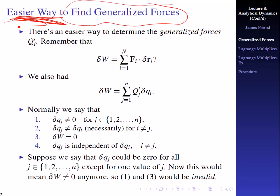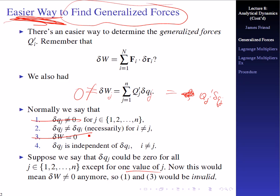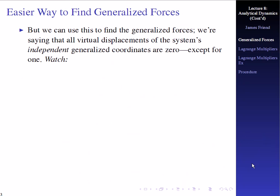Suppose delta Q_j could be zero for all j except for one particular value. Then all terms vanish except Q_j-prime times delta Q_j, which is the virtual work done for just that particular displacement, delta W sub j. This isn't necessarily equal to zero anymore, and this approach doesn't relate to the virtual work principle we discussed before. But we can use this to find the generalized forces — we're saying all virtual displacements of the system's independent generalized coordinates are zero except for one.